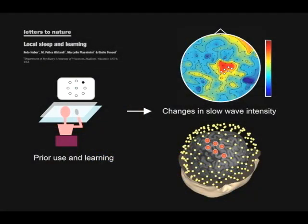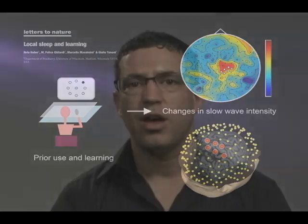Previous EEG studies in our lab suggested that slow waves are not identical across the cortex. For example, their intensity changes between regions depending on prior use and plastic processes. We therefore hypothesize that the slow oscillation may occur in a regional manner.